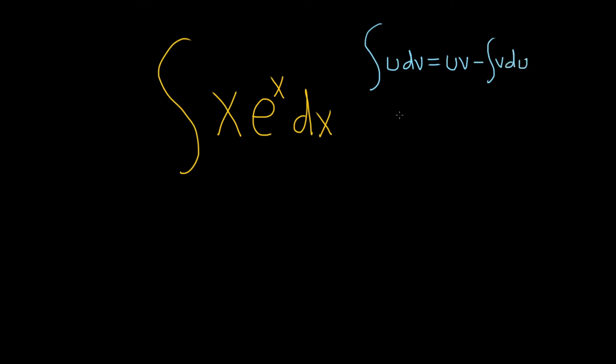Typically when you're using integration by parts, you want to pick your u and your dv. Your u, you have to be able to differentiate it, and your dv, you have to be able to integrate it. Typically you pick a u where the derivative is simpler.